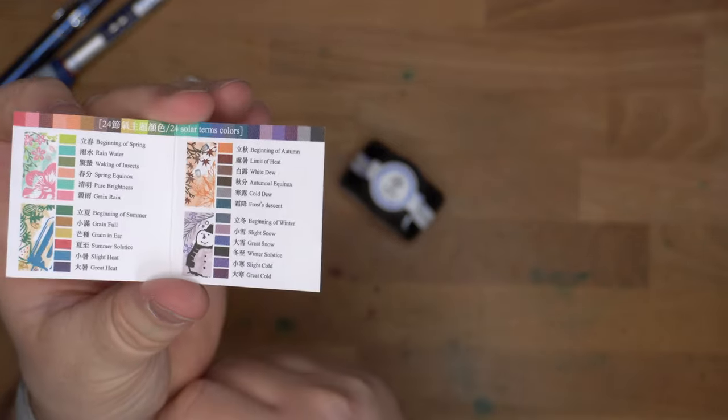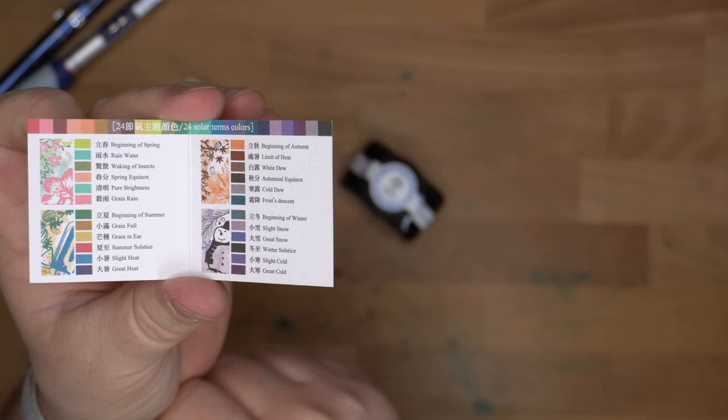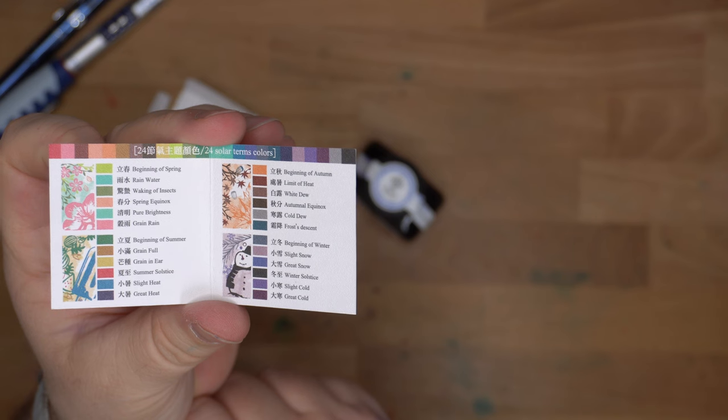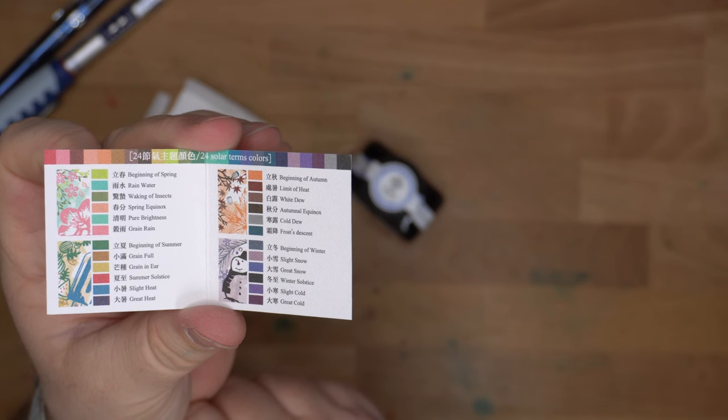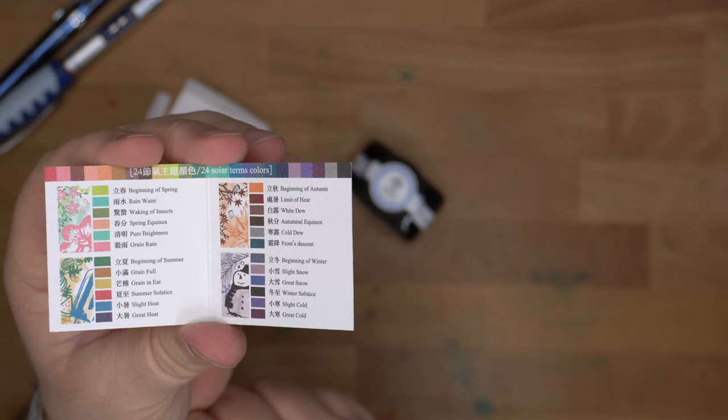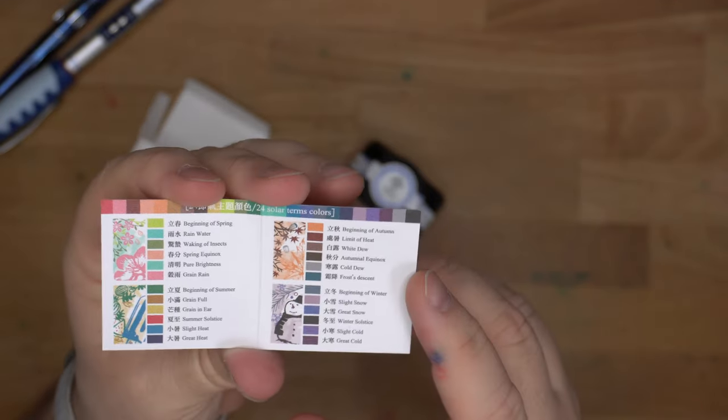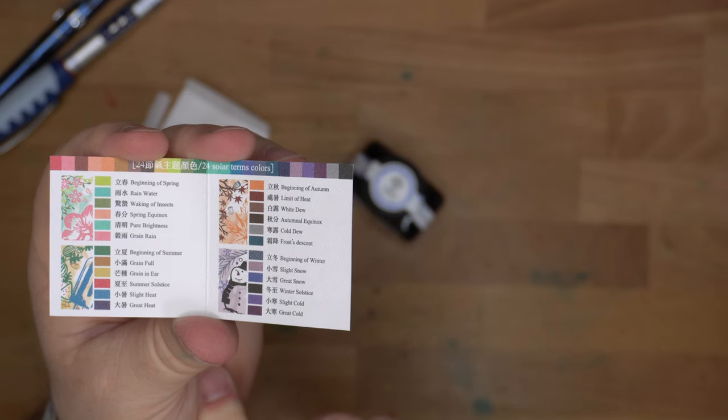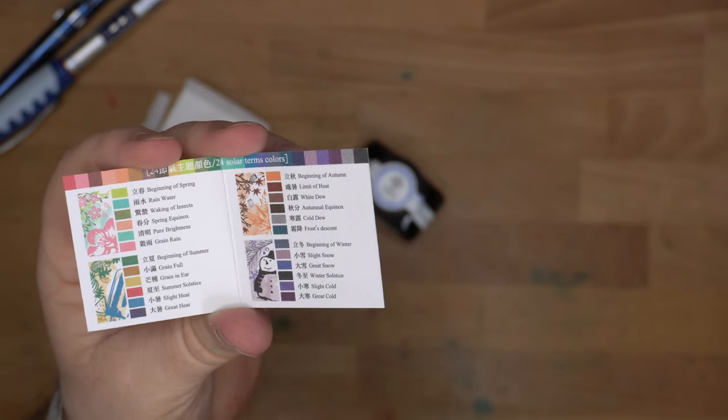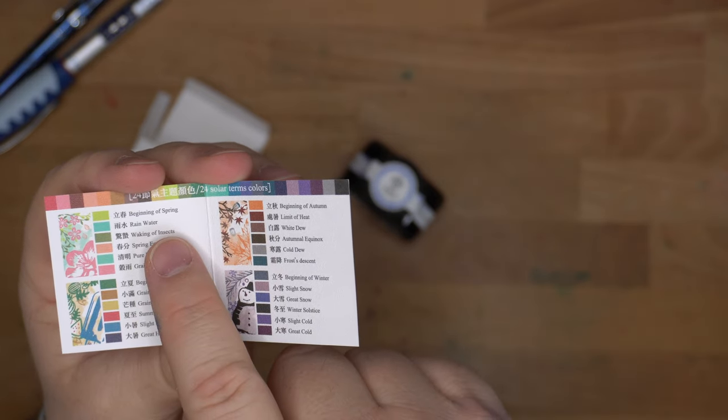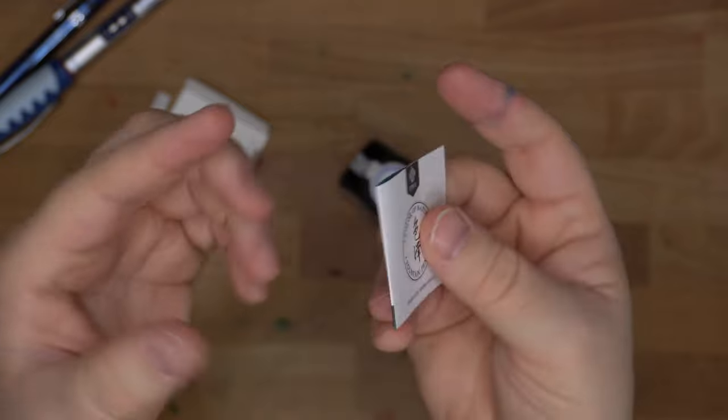And then it has the 24 colors in this series, which are the 24 solar terms representing annual changes of seasons and helping to guide agricultural activities through observing the position of the sun, which is what it says on the Vanness Pens website. And this is pretty cool. I have several of these and some of them are really fun to say, like Grain in Ear and Awakening of Insects. These are a fun thing to have.